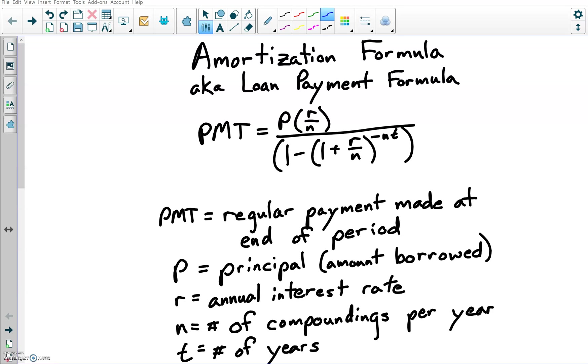Amortization formula, also known as the loan payment formula. What I'm going to do in this video is show you how this formula is derived and the formula itself is PMT equals P times R over N all over this big quantity with a one minus a smaller quantity one plus R over N raised to the negative N times T power.